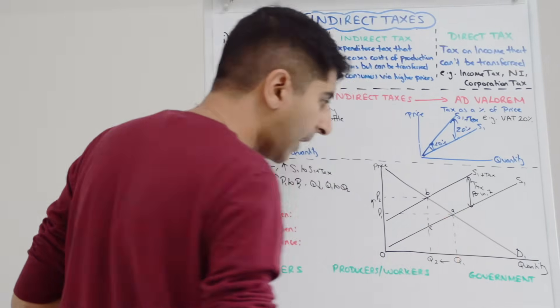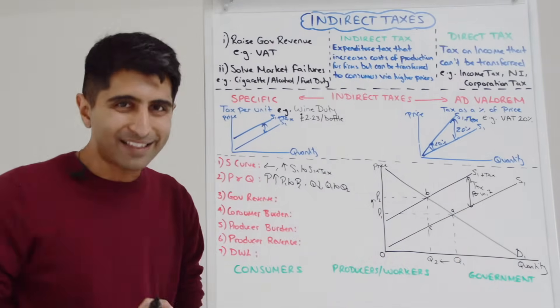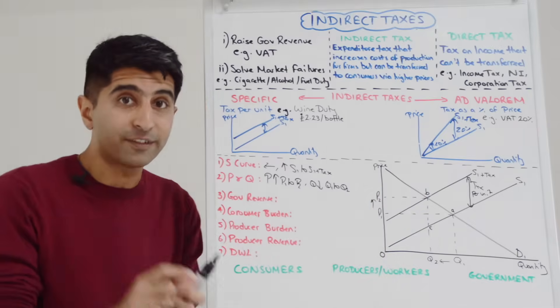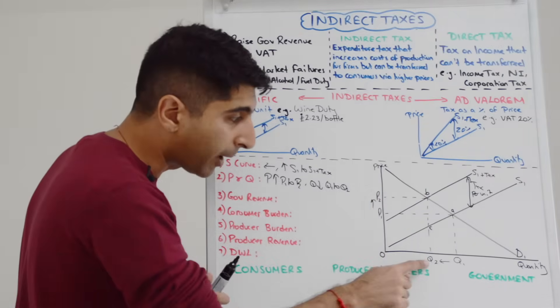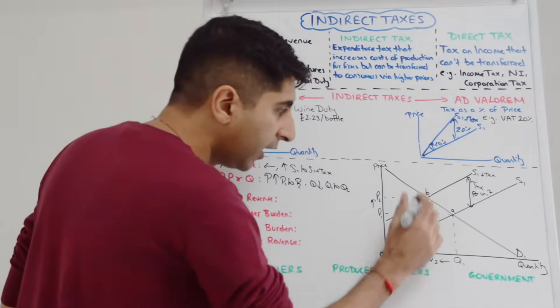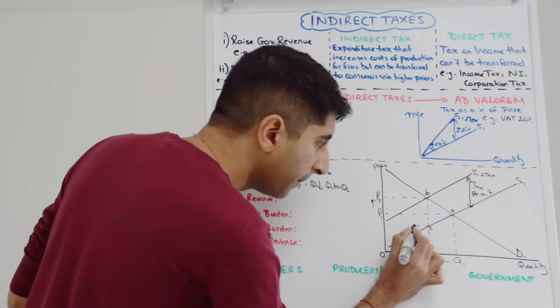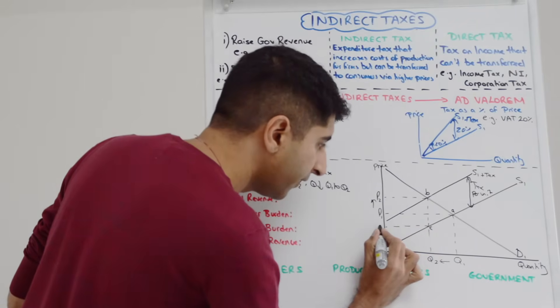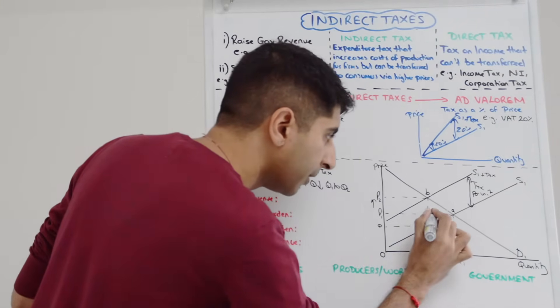You go to the new equilibrium P2Q2 point B. At that equilibrium work out the vertical distance between the two supply curves. So if I label that point C, BC is the vertical distance between the two supply curves. That is the tax per unit. We need to multiply that by all the units being produced and sold.